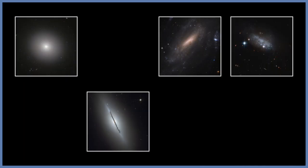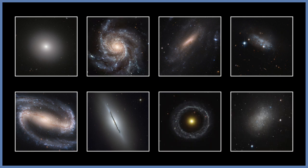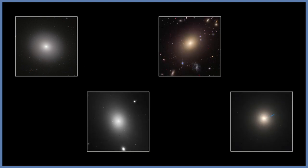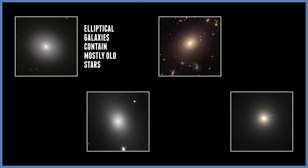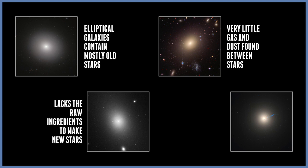The Hubble classification is based solely on how a galaxy looks, and it is still used today because there is a correlation between the physical differences and the different types of galaxies. Elliptical galaxies contain many old stars and have very little gas and dust found between them. Since new stars seem to form from clouds of interstellar gas and dust, elliptical galaxies lack these raw ingredients to make new stars, so they can be defined as a sort of dying galaxy.